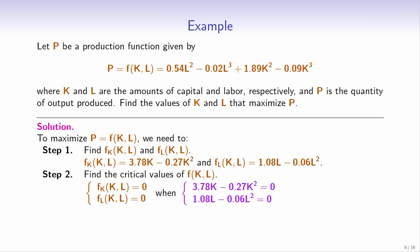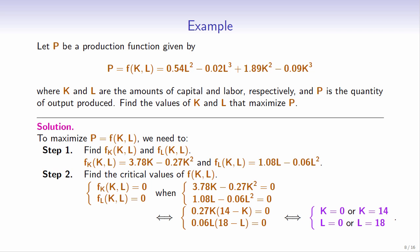Factoring the left-hand side of both equations, we have 0.27k times (14 minus k) equals 0, and 0.06l times (18 minus l) equals 0. So the first order partial derivatives equal 0 when k equals 0 or k equals 14, and when l equals 0 or l equals 18. The first order partial derivatives are never undefined, so we do not need critical values where they do not exist. Since k can be 0 or 14 and l can be 0 or 18, we have four critical values: (0,0), (0,18), (14,0), and (14,18).